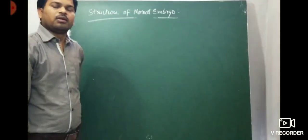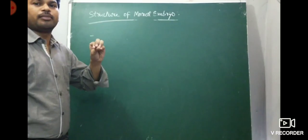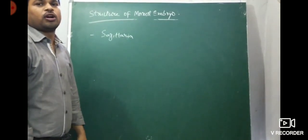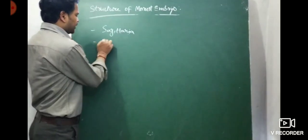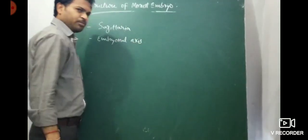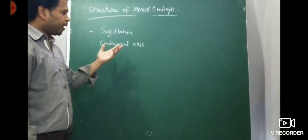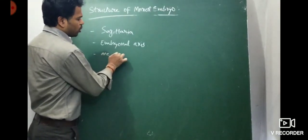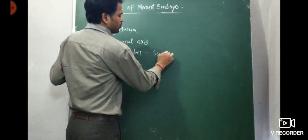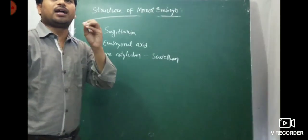Now, structure of monocot embryo. Monocot embryo is observed in Sagittaria plants — a grass example. Here also the embryonal axis is present. But there is only one cotyledon. This one cotyledon is a large, shield-shaped structure called the scutellum, present on one side of the embryonal axis.